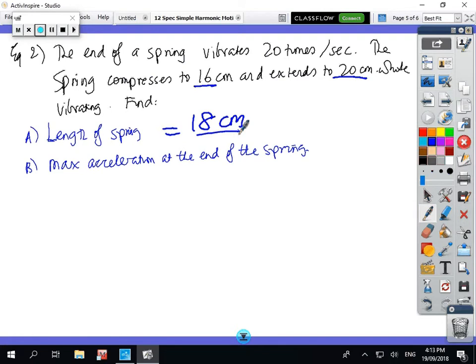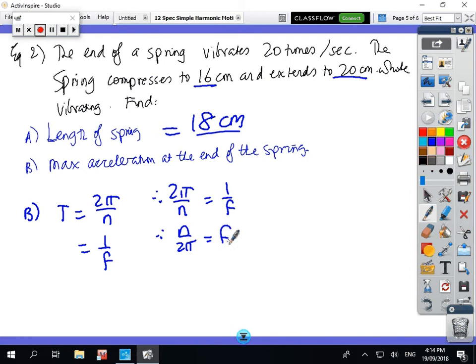So we've got period equals 2π/N, which also equals 1 over the frequency. Therefore, 2π/N equals 1/F. Therefore, N equals 2π times the frequency, which is 2π times 20. So we get 40π radians per second.